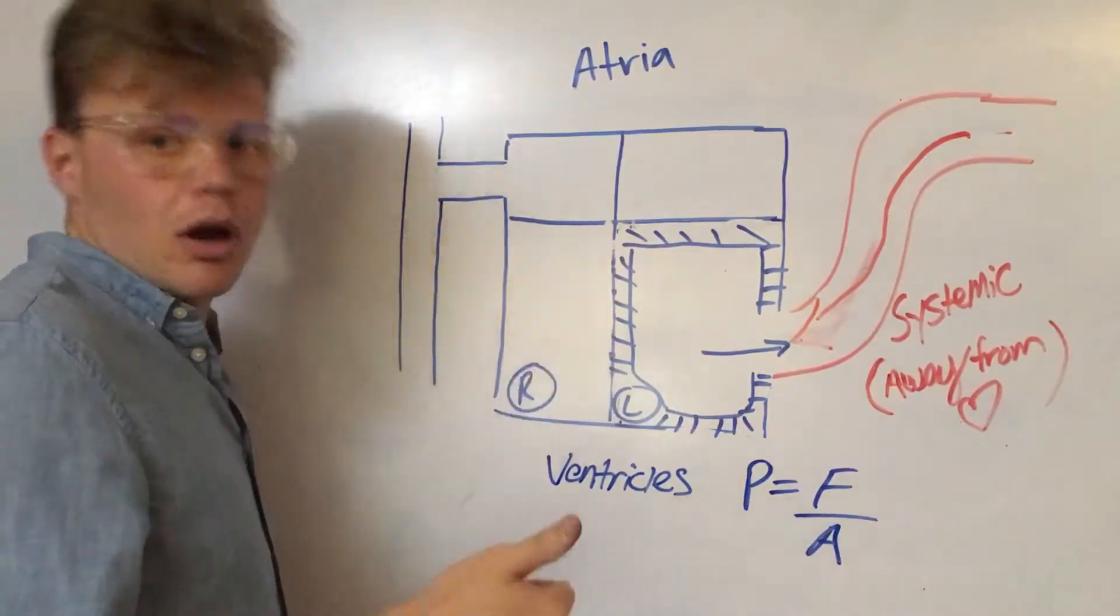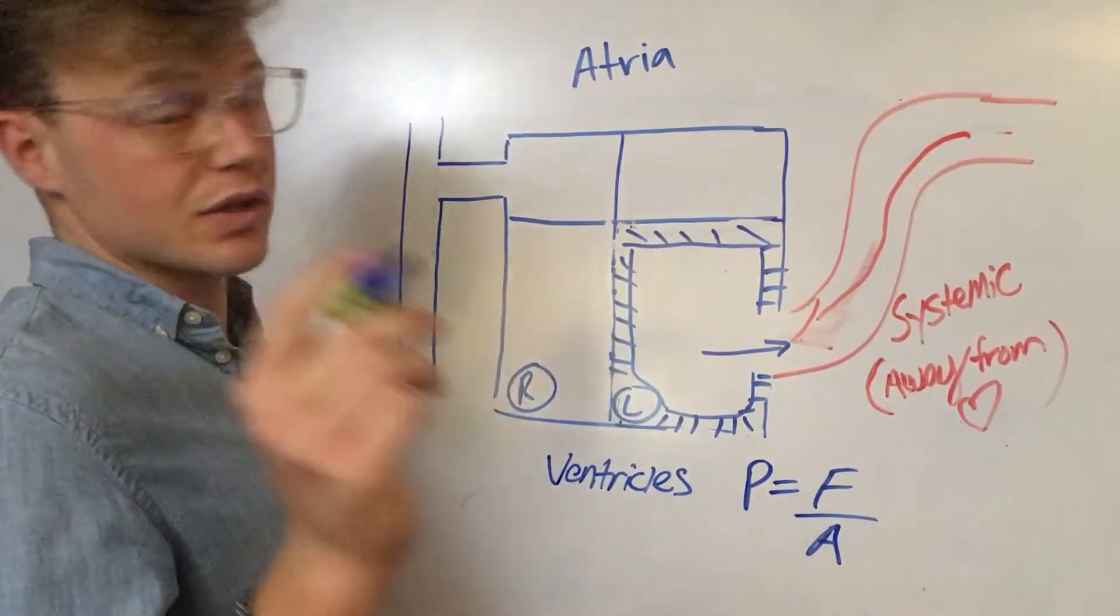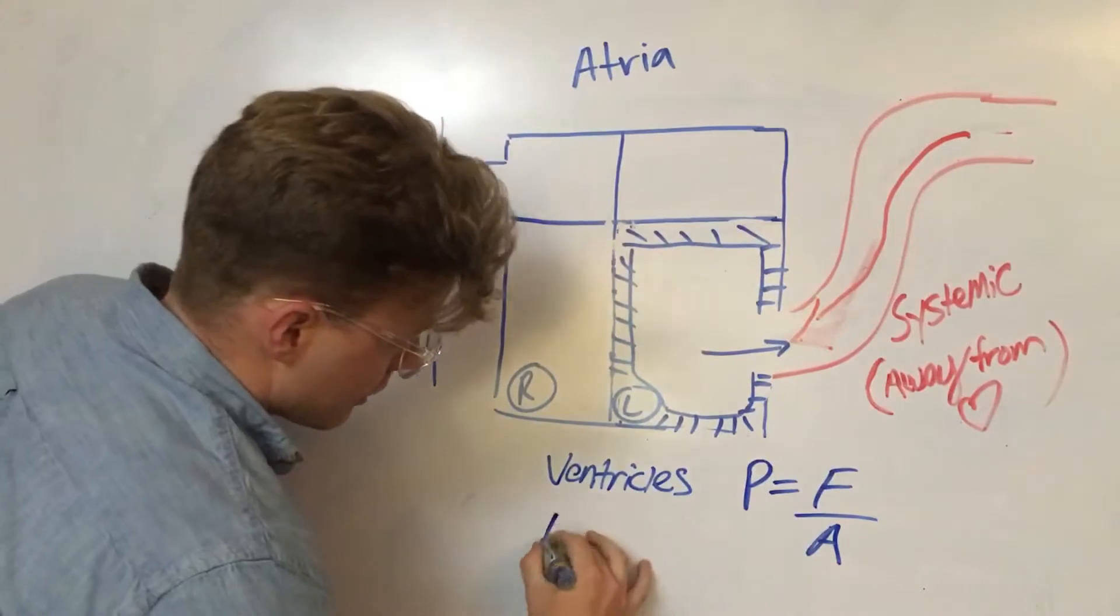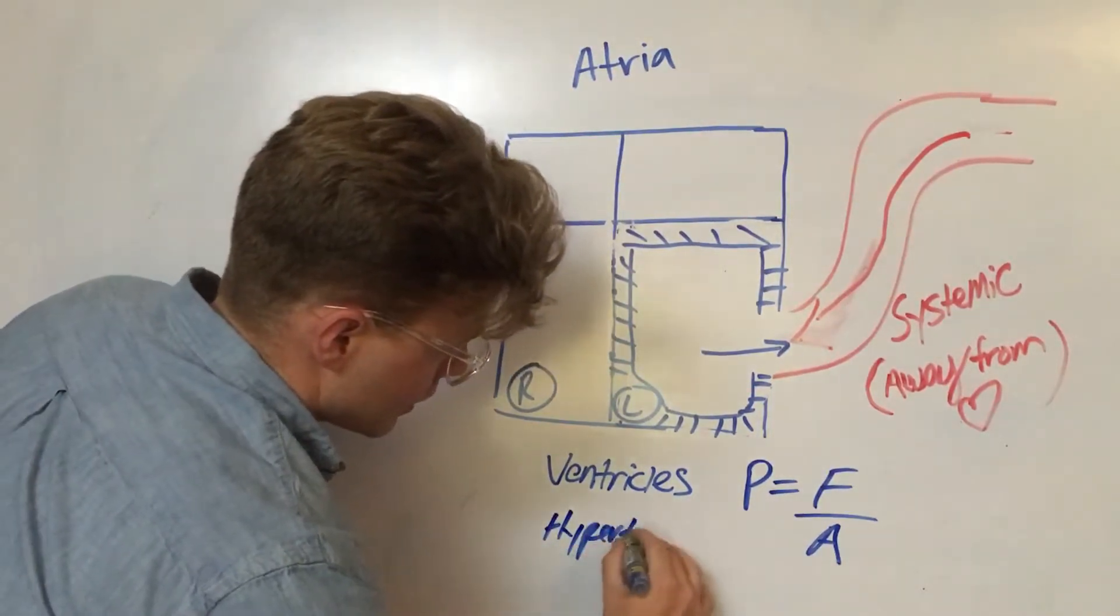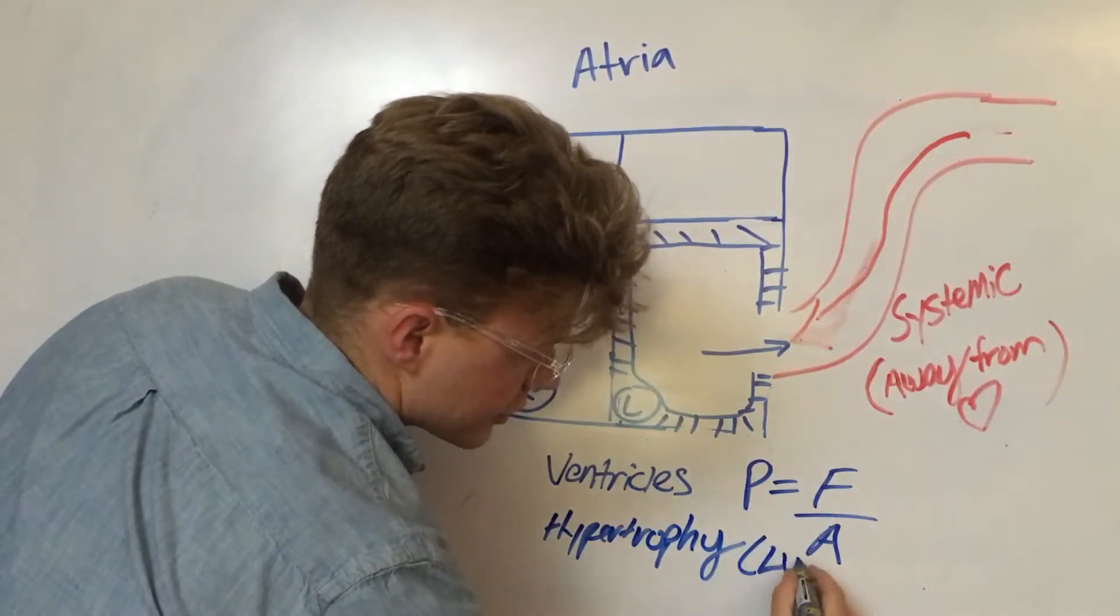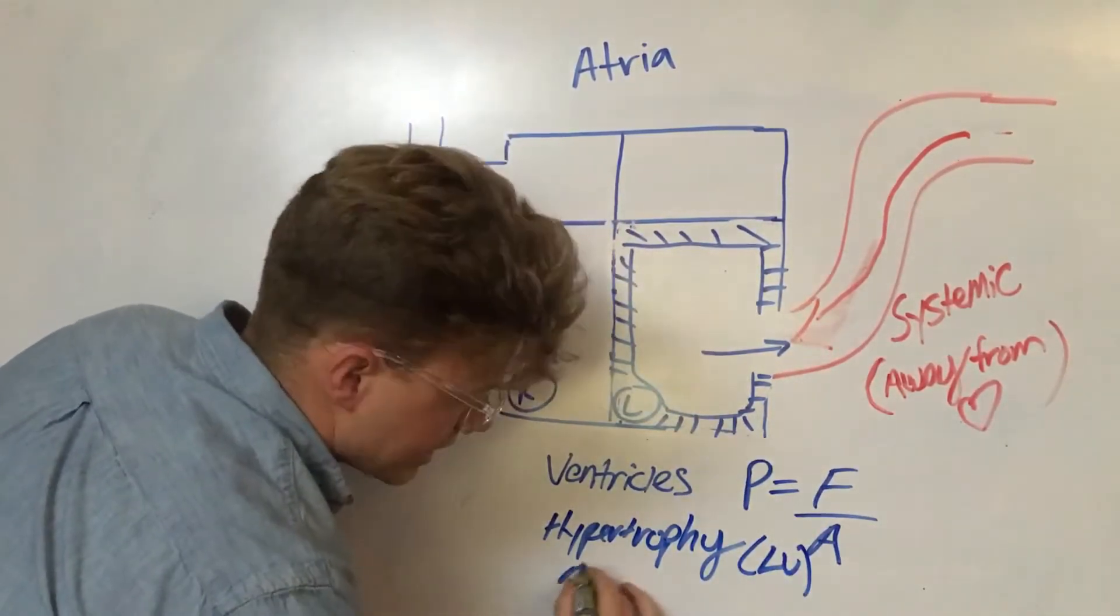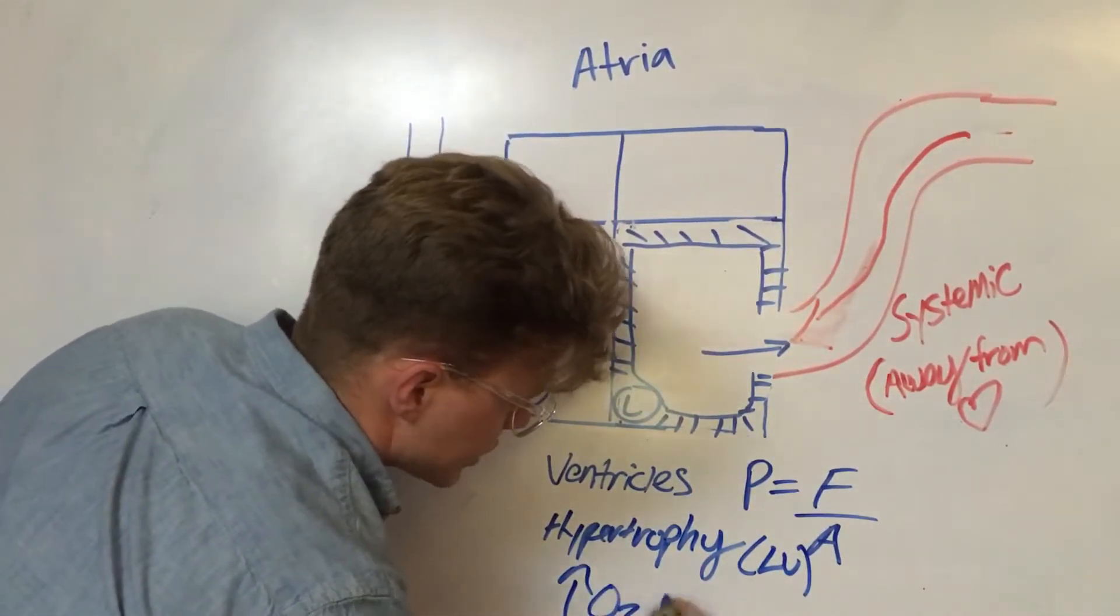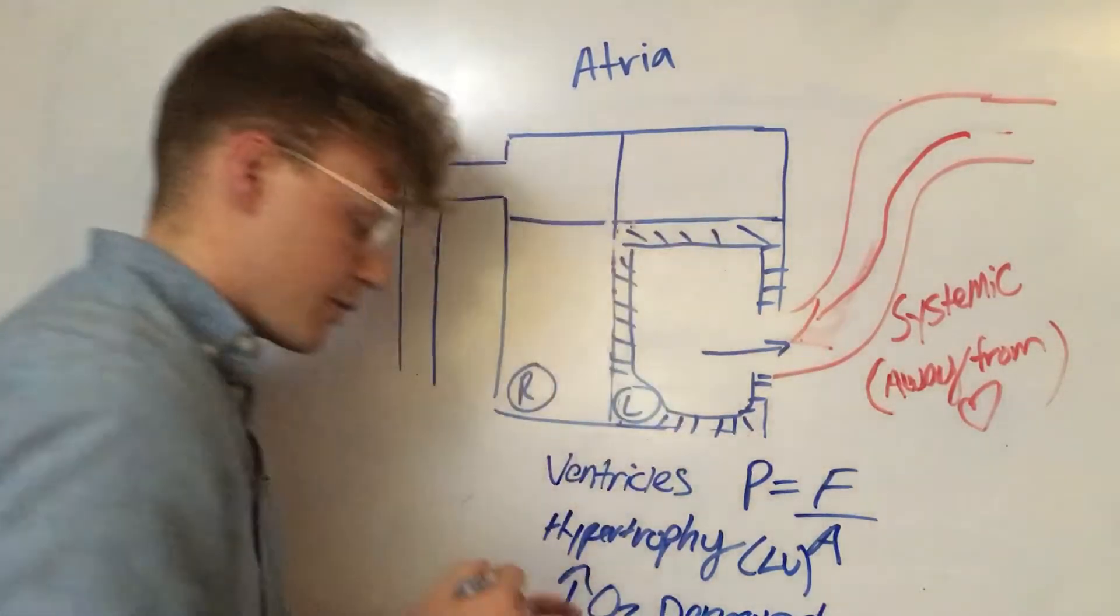So not only do you have a bigger heart, which you don't want because that increases, this is the big reason. When you have a bigger heart, when you have hypertrophy, and I'll put LV, left ventricle, because that's what we're showing. The big thing, you guys, you increase your oxygen demand, which makes sense.